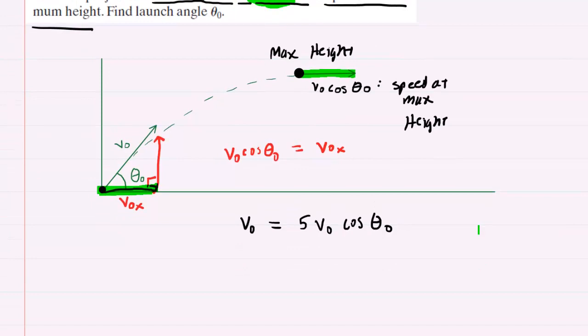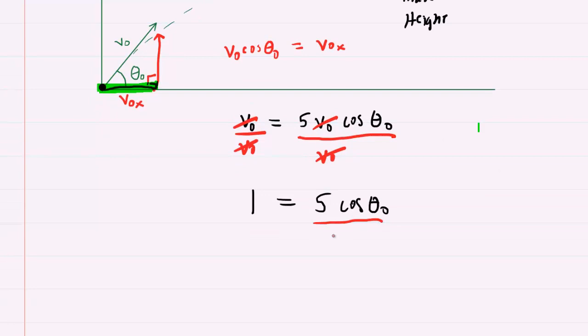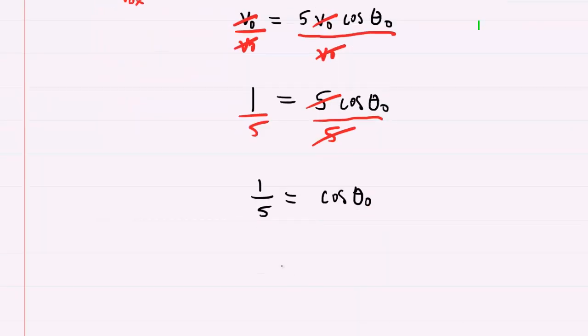Now we're going to solve this for theta naught. We'll divide both sides by v naught. Doing so cancels the v naughts but it does leave us with a one on the left-hand side. Then continuing to solve for theta naught we will divide both sides by five. So now we have one fifth equals the cosine of theta naught.